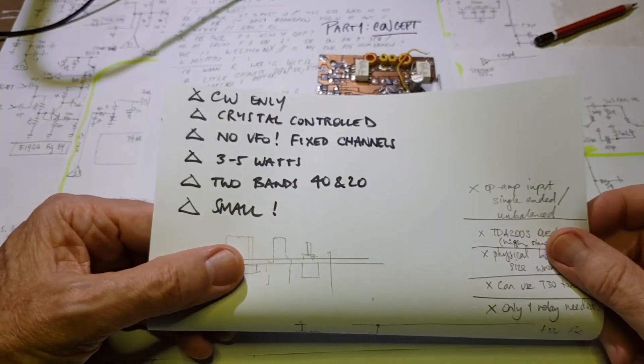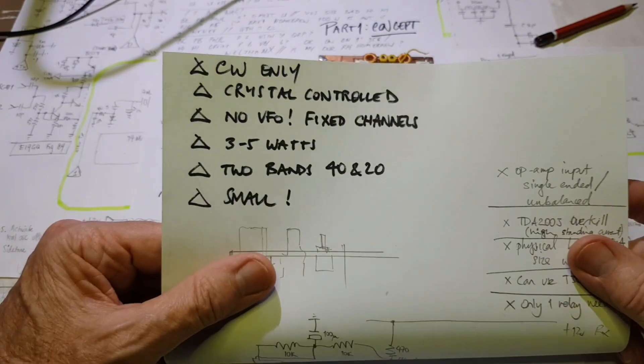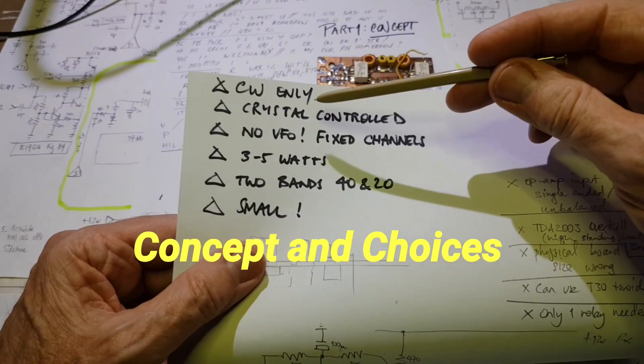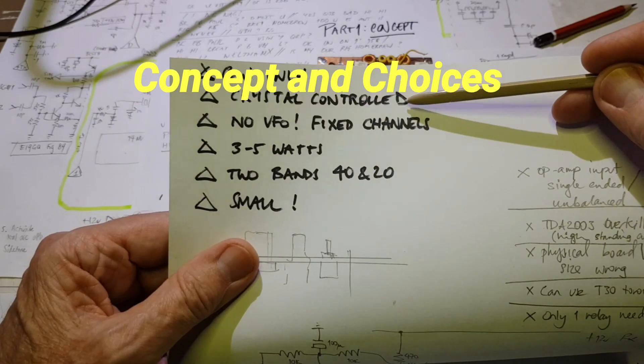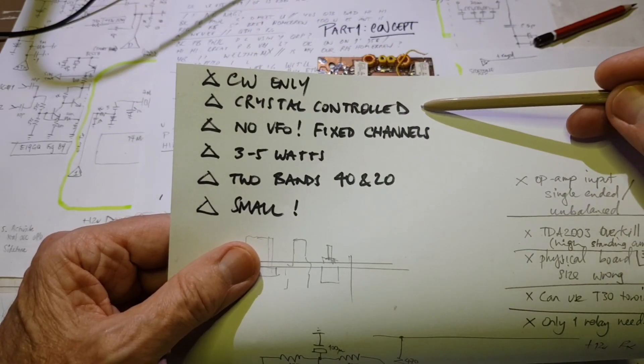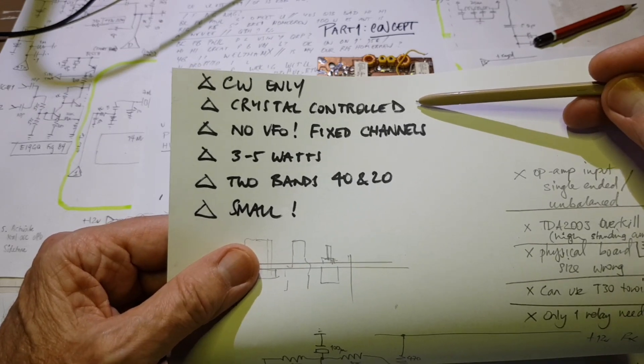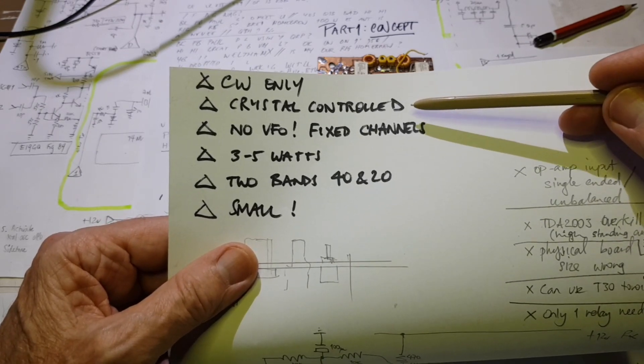I just wanted to go back over and revisit what it is I'm going to design here. CW only, crystal controlled, so no microcontroller, no SI5351. It's going to be crystal oscillators for both receiver and transmitter.